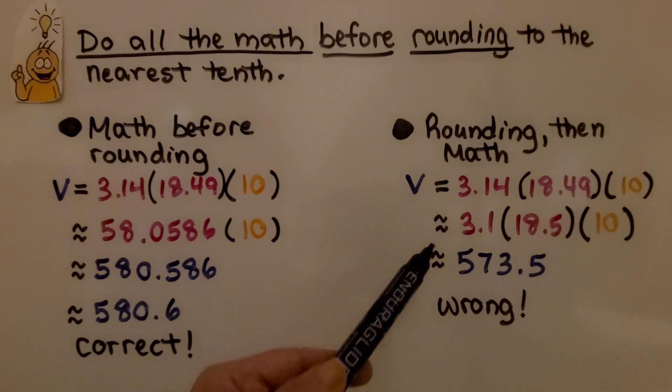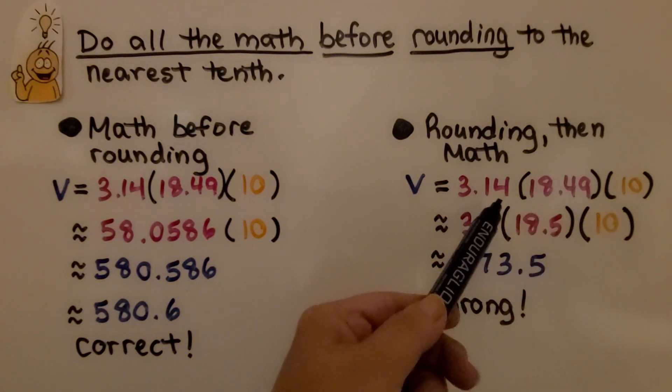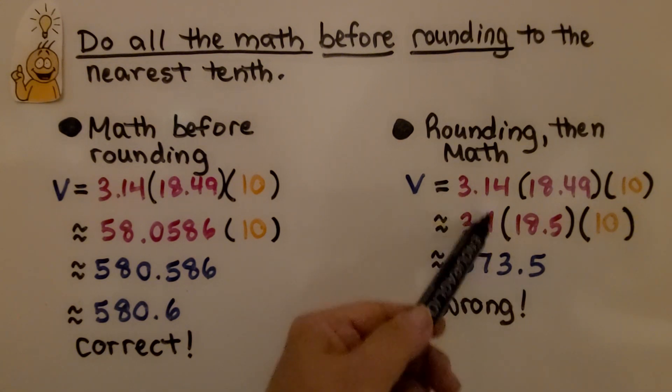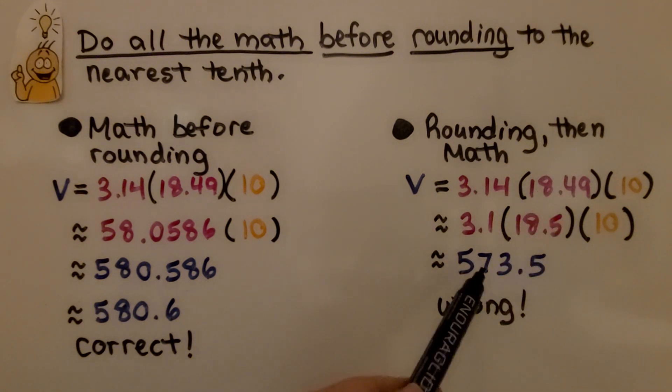We have 580.6. If we try rounding to the nearest tenth, then doing the math, thinking it'll be easier, we're not multiplying by the full values. We would have 3.1 for pi and 18.5 for r squared. We would get 573.5. That's wrong.